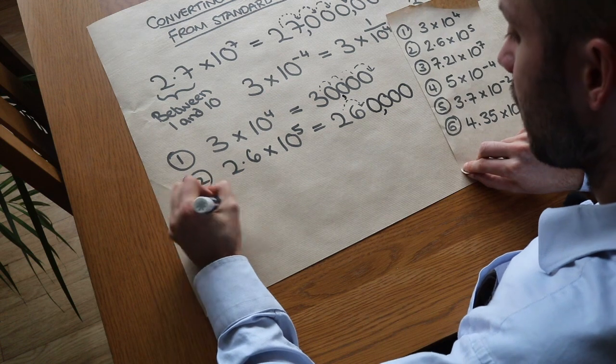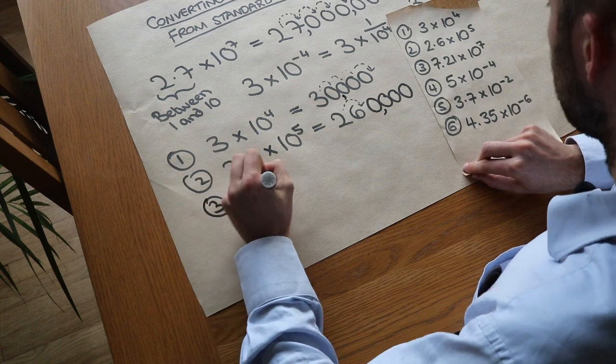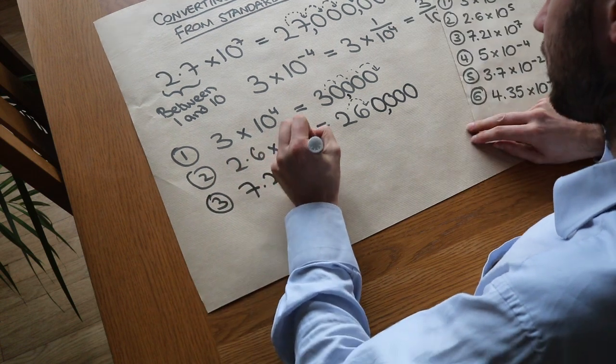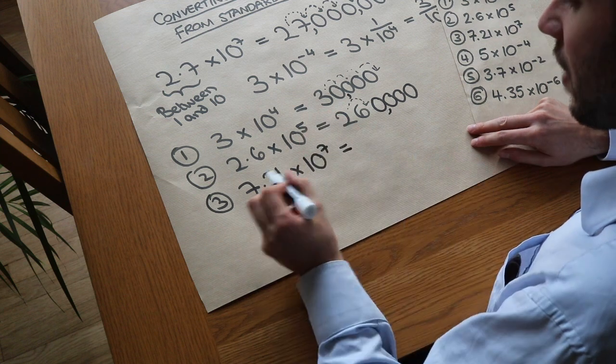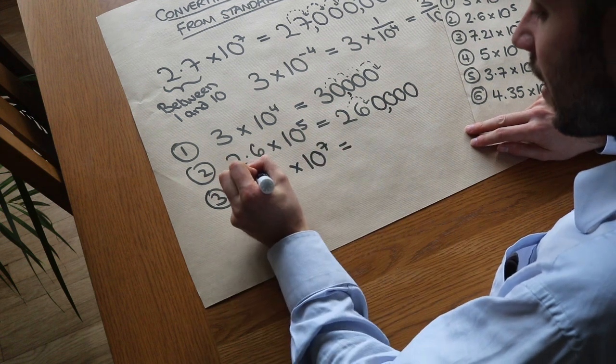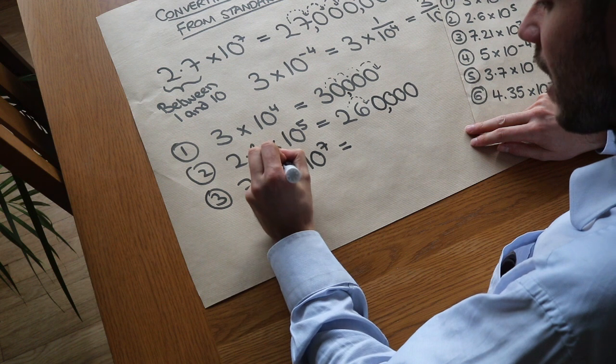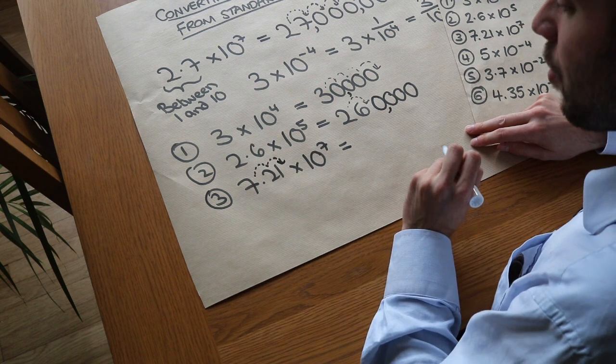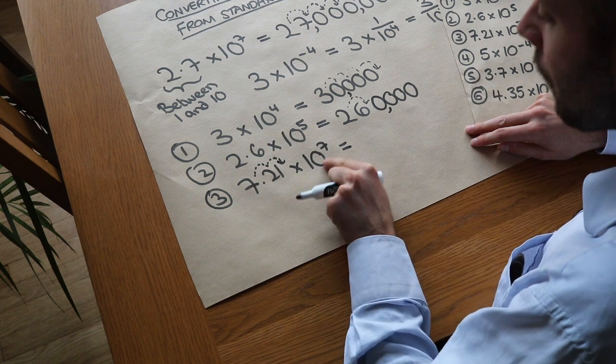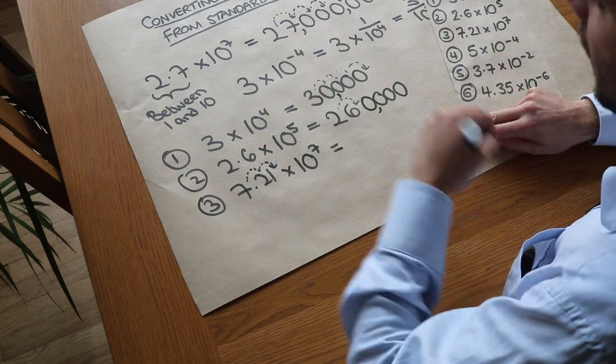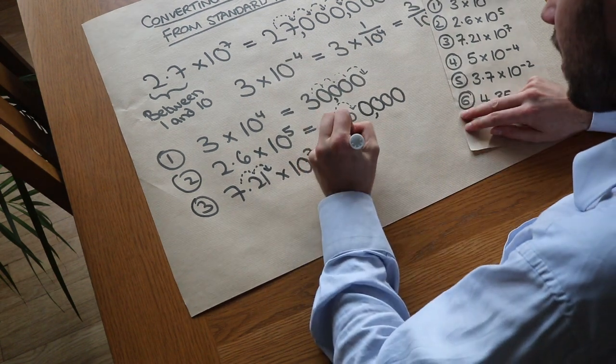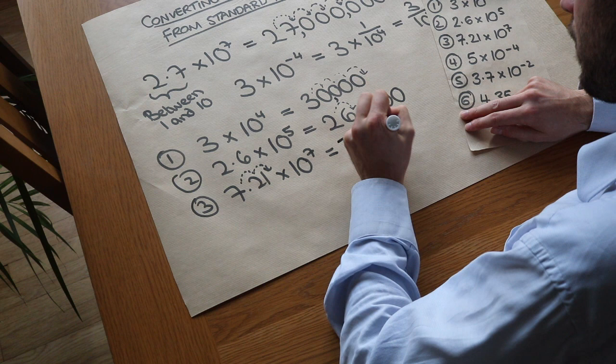What about the next one? 7.21 times 10 to the power of 7. The first two times we multiply by 10, it's going to have the effect of getting us to 721, but we still need to multiply it by five more tens. So that's going to add five zeros to the end, so it's 721 followed by five zeros.